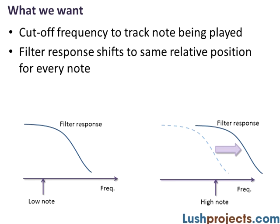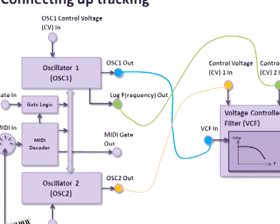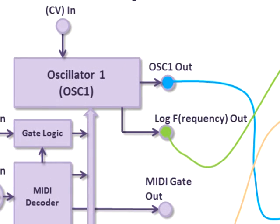Ideally, if we want all the notes to sound the same, we want the filter cutoff to track the note that's being played. If you go out and spend mega bucks on a big system you'll get nice one volt per octave calibrated inputs and outputs to do that. We don't have precisely calibrated outputs and inputs in the Lush One, but we do have proportionate outputs which you can use to generate the same effect.